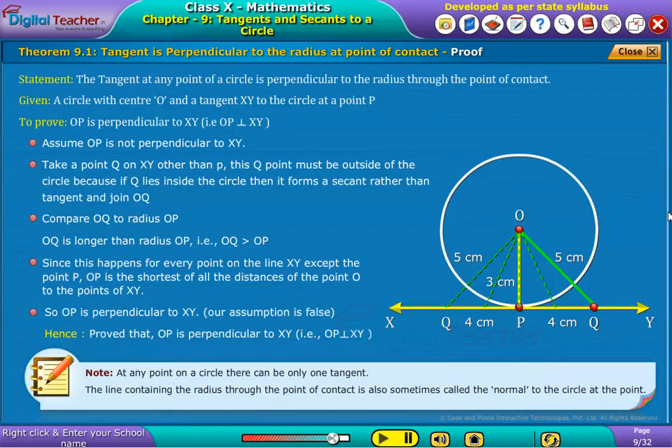Note the observations in this theorem. By this theorem, it is concluded that at any point on a circle, there can be only one tangent. The line containing the radius through the point of contact is also sometimes called the normal to the circle at the point.